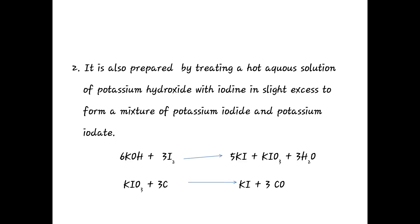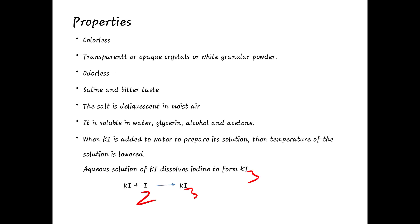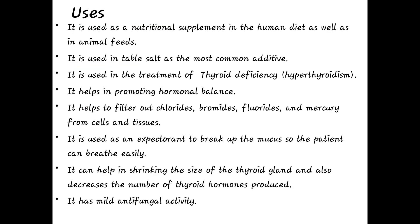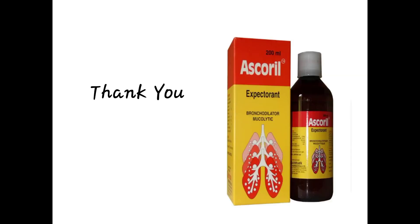Second preparation: prepared from a hot aqueous solution of potassium hydroxide with iodine to form potassium iodide and potassium iodate; the potassium iodate reacts with carbon to form potassium iodide plus carbon monoxide. The lecture covered preparation, properties, identification, test for purity, storage, and uses of potassium iodide. Thank you all.